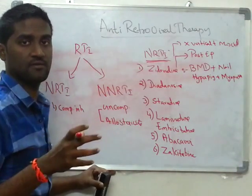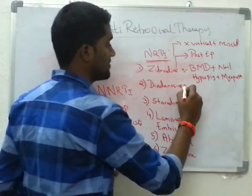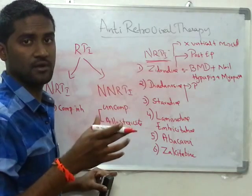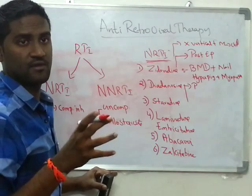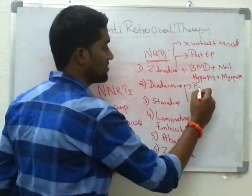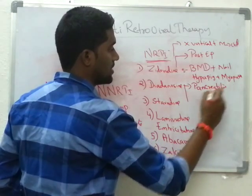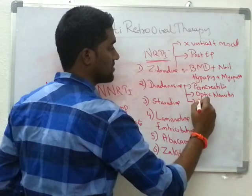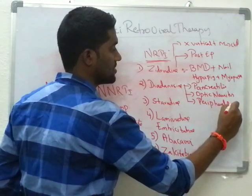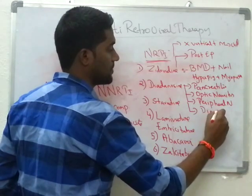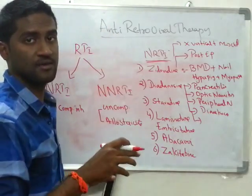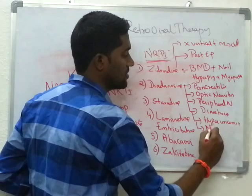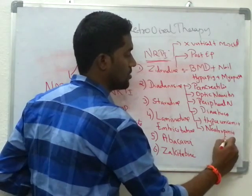For Didanosine — it sounds like diabetes. Like diabetes, the organ affected is the pancreas, so it can cause pancreatitis. Like diabetes it can affect the eye causing optic neuritis, and a classical feature of diabetes is peripheral neuropathy — same here, there will be peripheral neuropathy. It can also cause diarrhea, and instead of hyperglycemia, remember it causes hyperuricemia. There will be neutropenia, not anemia. The dose-limiting side effect of Didanosine is pancreatitis.